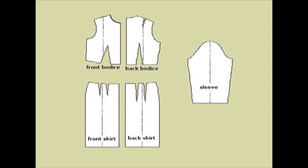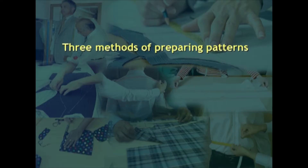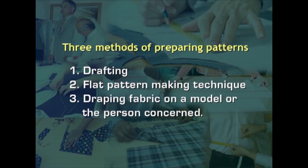A block pattern consists of five pattern pieces: body's front, body's back, skirt front, skirt back, and the sleeve pattern. The basic pattern should have only a minimum number of darts and seams and should fit the body comfortably without being tight or loose. There are three methods of preparing patterns: drafting, flat pattern making technique, and draping fabric on a model or the person concerned.